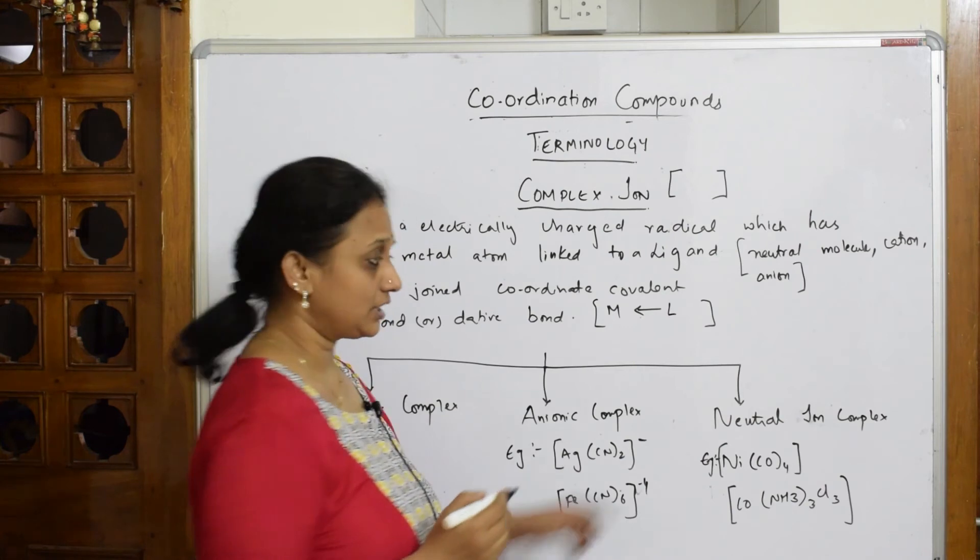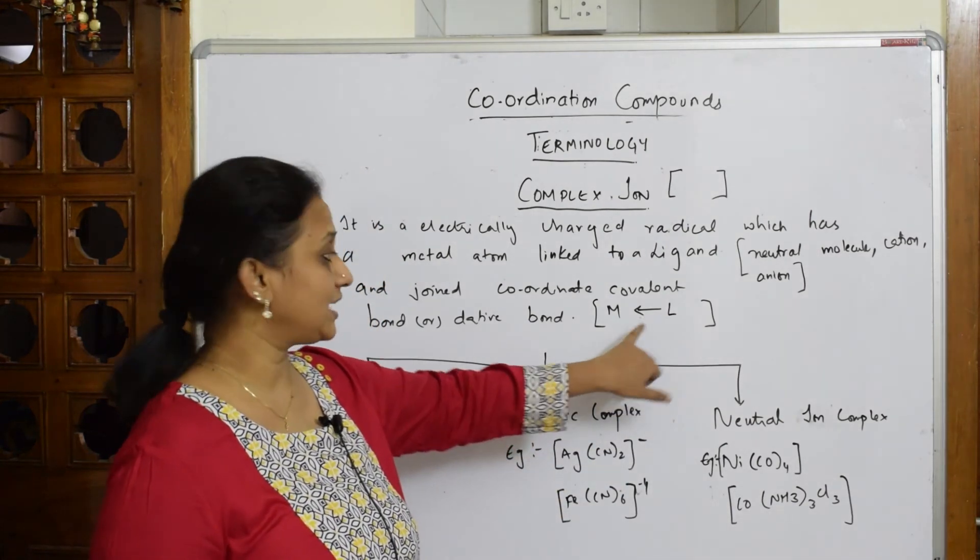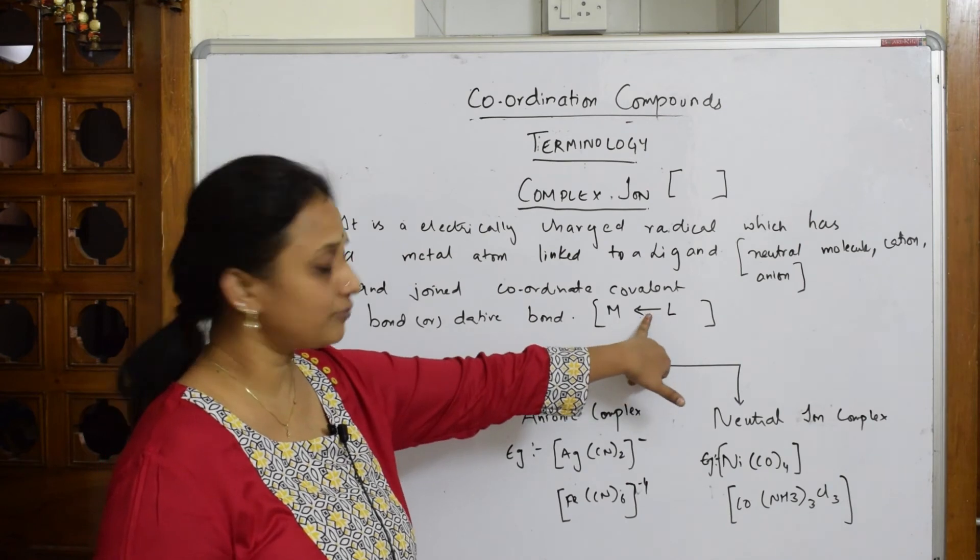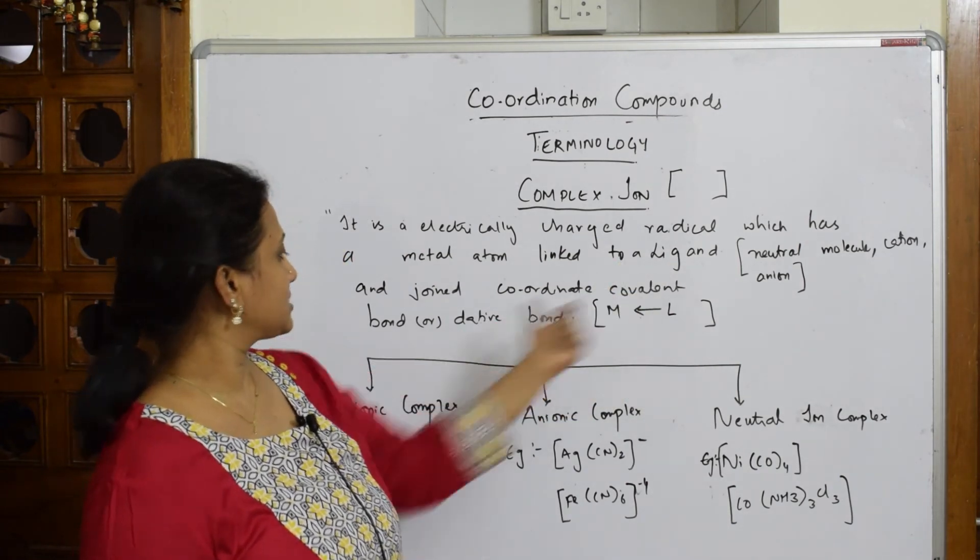This is the coordinate covalent bond: the ligand has a lone pair of electrons and the metal has a vacant orbital to accept the lone pair. The bond formed between them is called a dative bond. This is the most important concept for starting your answer.